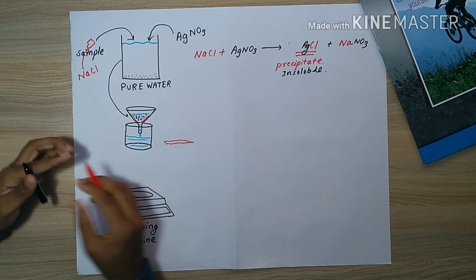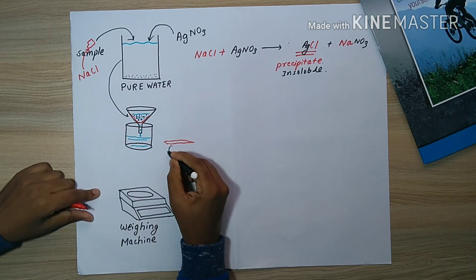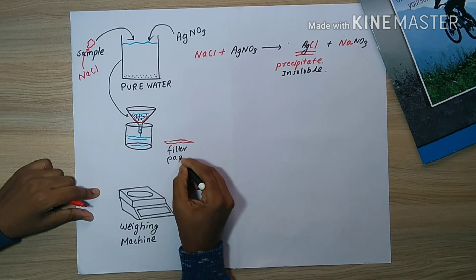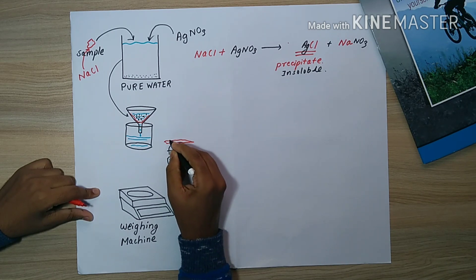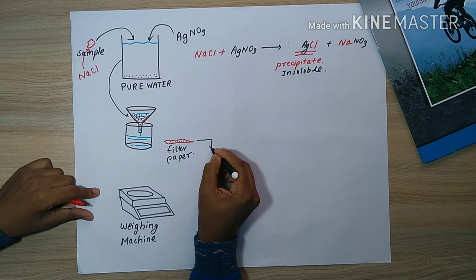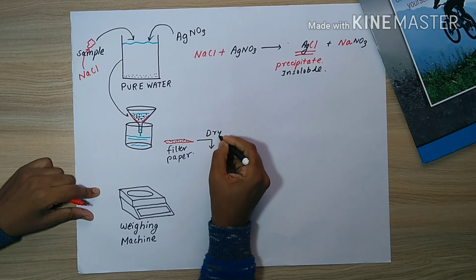What happens is that only the precipitate is left over the filter paper. The rest of the solution drops down onto the beaker, and precipitate remains above the filter paper. Now it is removed and the precipitate is dried.